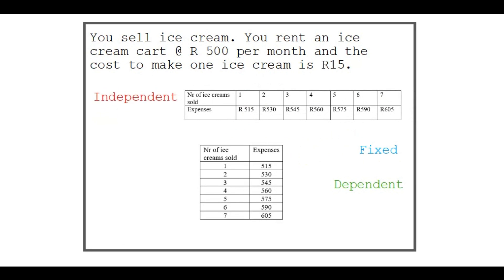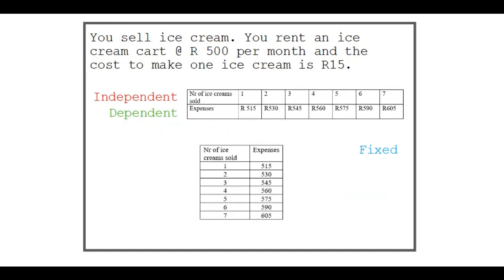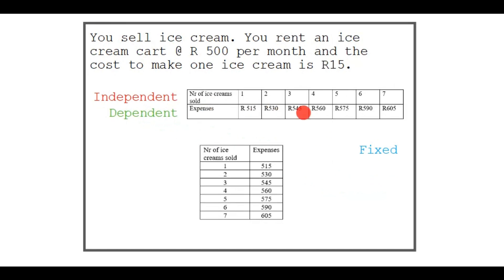Let's decide where the independent variable goes. It's going to be the first row, so it's the number of ice cream sold. And then the dependent variable is going to go to the second row, so that is the expenses, or your cost to make ice creams.